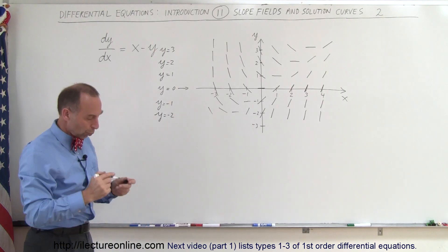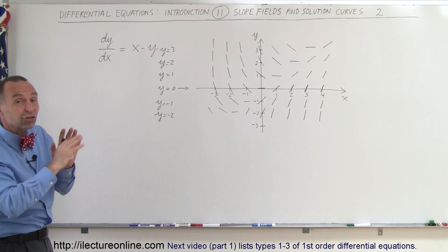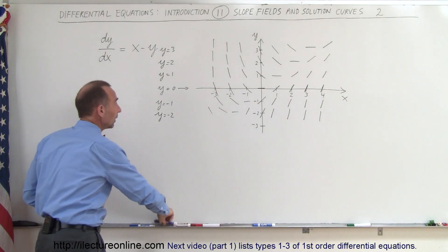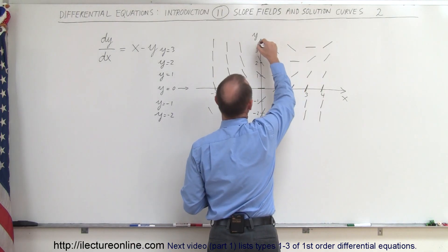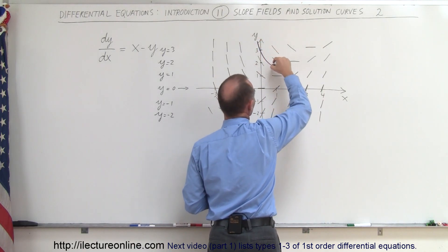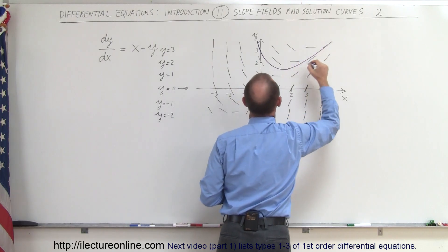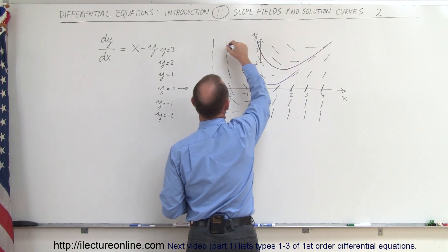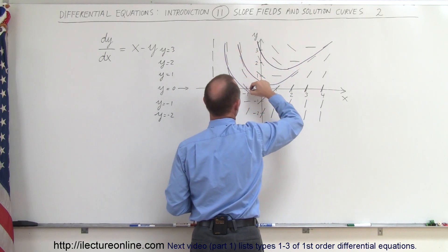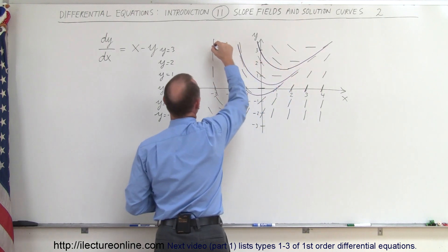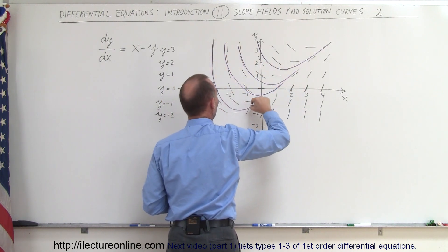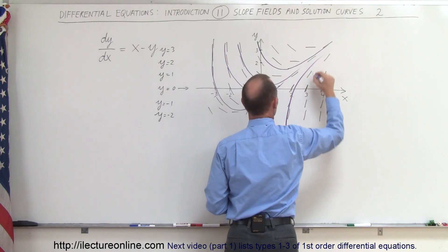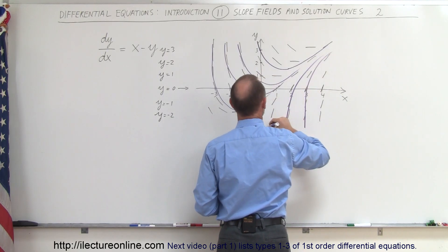Now you have a pretty good idea what the curves look like — we have a slope field. Now we're going to draw some possible solution curves. You can see that a solution curve could look like this and up like that. A solution curve here would look like this, and like that. Here the solution curve would look like this, and like that. On the other side the solution curves would look like this, here like this, here like this.